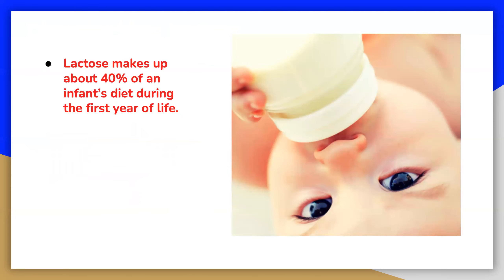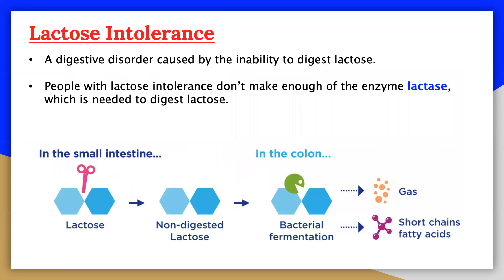Lactose makes up about 40% of an infant's diet during the first year of life. Infants and small children have an active form of the enzyme lactase in their small intestines and can digest the sugar easily. However, adults usually have a less active form of the enzyme, and about 70% of the world's adult population has some deficiency in its production. As a result, many adults experience a reduction in the ability to hydrolyze lactose to galactose and glucose in their small intestine.